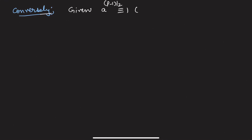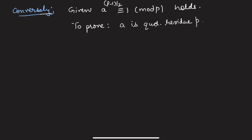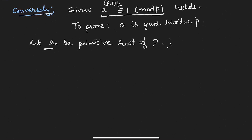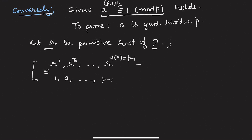Conversely, given that a^((p-1)/2) ≡ 1 (mod p), we need to prove that a is a quadratic residue of p. Let r be a primitive root of p. We know every prime has a primitive root. Moreover, the powers r¹, r², ..., r^(p-1) are congruent in some order to 1, 2, ..., p-1. So since gcd(a, p) = 1, a belongs to this reduced set.